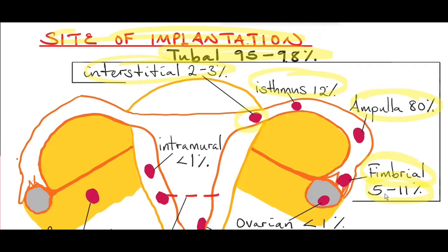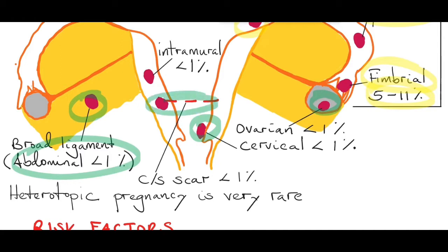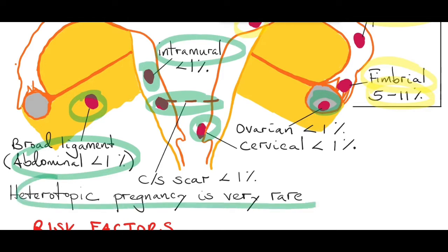The patient can even present as late as 16 weeks gestational age. The less common sites of implantation are the ovary, the cervix, the broad ligament — also known as abdominal ectopic pregnancy. It can also implant in a previous caesarean section scar, giving a caesarean scar ectopic pregnancy, or inside the myometrium — called an intramural ectopic pregnancy. Heterotopic pregnancies are very rare: this is where you have both intrauterine and ectopic pregnancies occurring together.